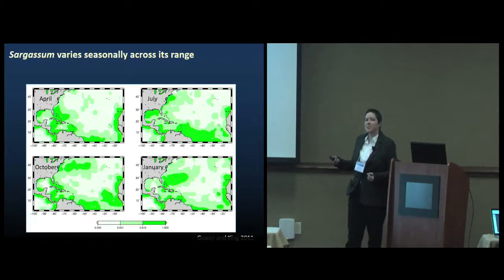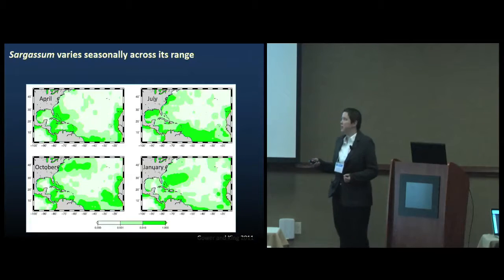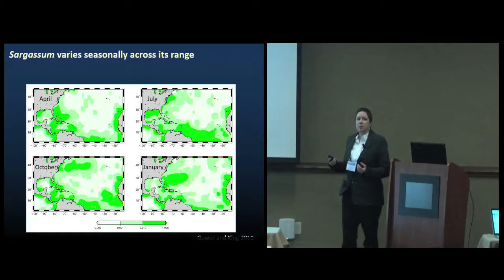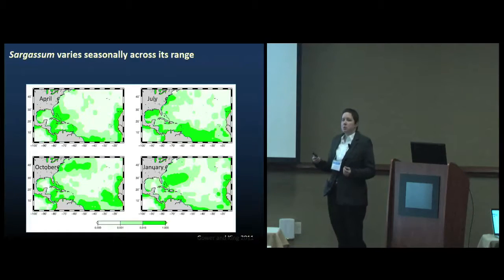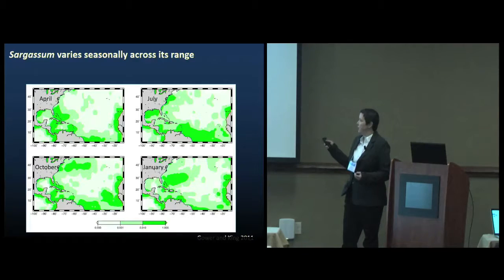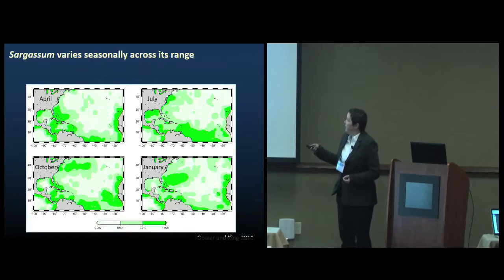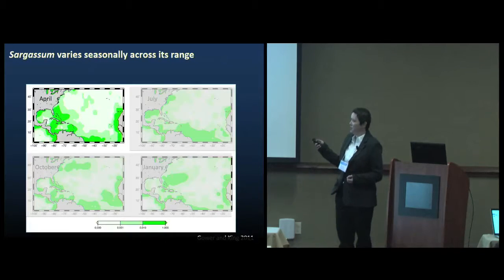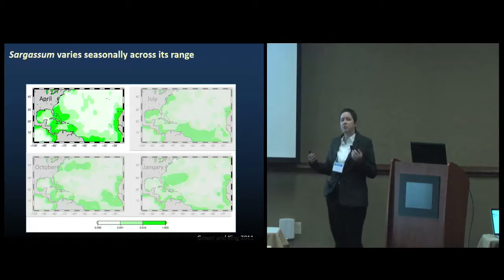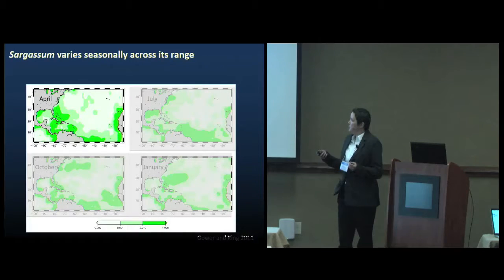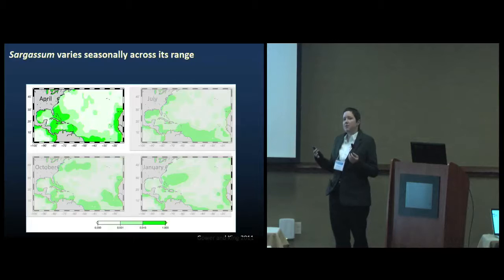Now we're going to take a look at some observations of sargassum. It's only really been in maybe the last 10 years or so that we've been able to observe this seasonal distribution of sargassum from satellites. These are climatologies that are derived from MODIS satellite chlorophyll imagery. The darker green colors are higher sargassum biomass. I sort of think of the sargassum annual cycle starting in the spring, and there starts to be some development of sargassum biomass in the western Gulf of Mexico here.